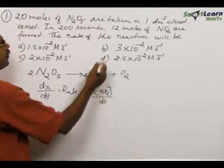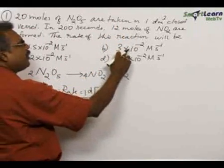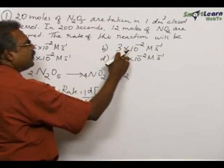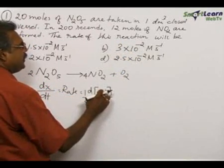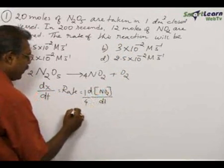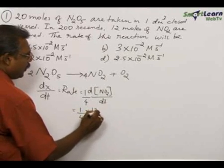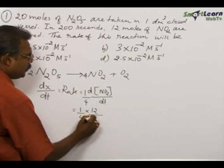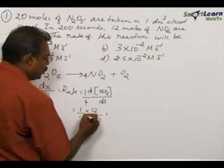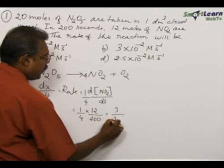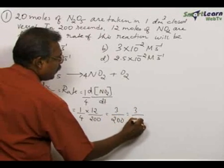The change in concentration: final concentration 12, initial concentration 0 because product initially no moles of NO2 are there. Therefore, the change in the concentration is an increase of 12. We can write 1/4 × 12 divided by the time, which is 200.